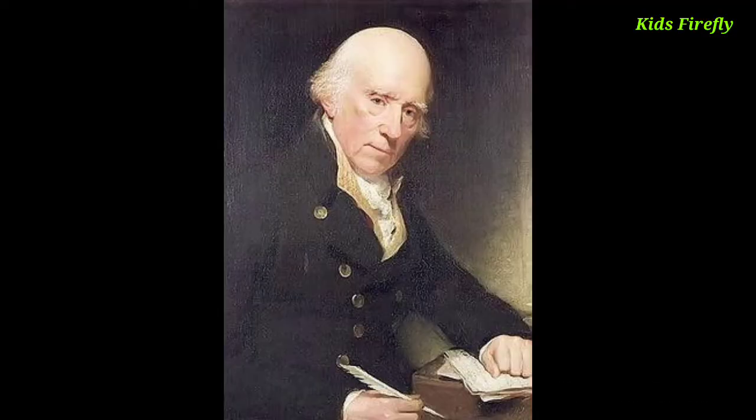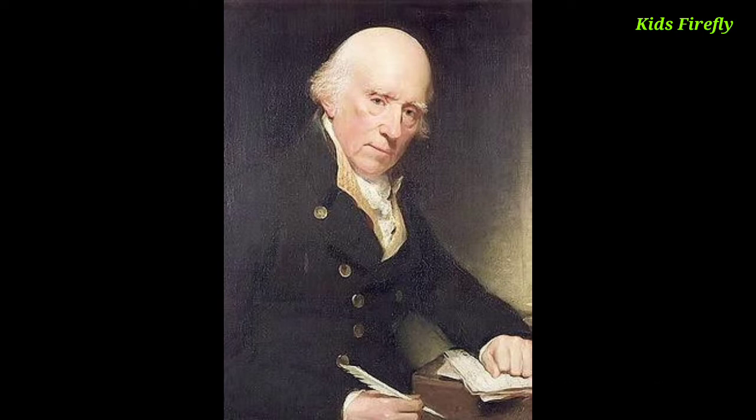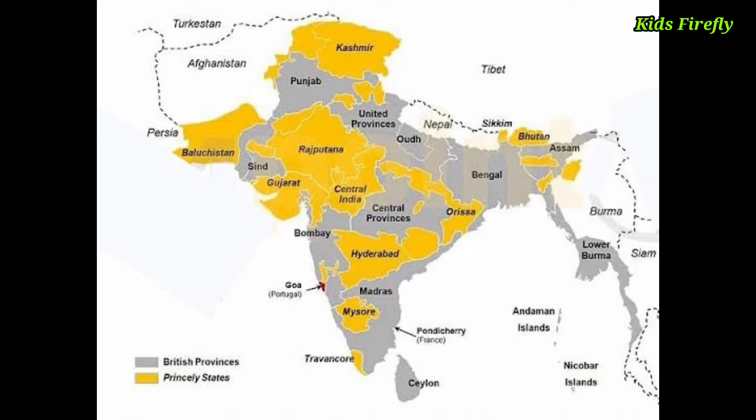Warren Hastings, the first Governor-General of Bengal, played a significant role in the expansion of company power. By this time, the company had also established its power in Bombay and Madras.